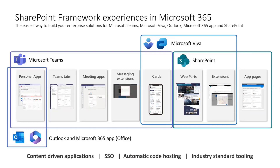We started with SharePoint with web parts, extensions, full-page applications, and app pages. Then we enabled SharePoint Framework capabilities in Microsoft Teams, where you can use it to build personal apps, Teams tabs, meeting apps, and messaging extensions. With Viva Connections and Viva Topics, which are based on SharePoint as a backbone infrastructure, you can use SharePoint Framework to build extensibility pages for topics, cards, or the Viva Connections dashboard home experience. And as we progress toward having other canvases in the Microsoft 365 ecosystem, you can start using SharePoint Framework to build solutions for Outlook and Office applications.